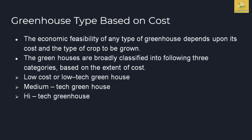The classification of greenhouses based on cost depends on the economic feasibility, the type of cover, and the type of crop to be grown. Greenhouses are broadly classified into three categories: low cost, medium cost, and high-tech.